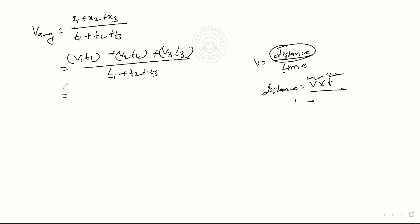We'll put all values. V1 is 50, and t1 is 0.5. Plus v2 is 30 into t2 which is 0.25. Plus v3 is 70, t3 is 0.75. The whole thing divided by t1 which is 0.5, t2 which is 0.25, and t3 which is 0.75. Now we have to solve.